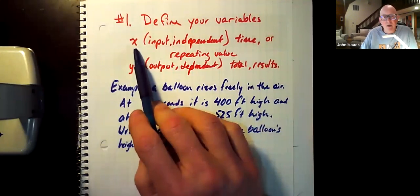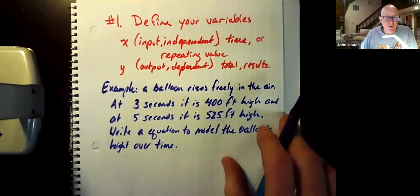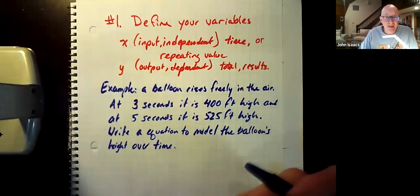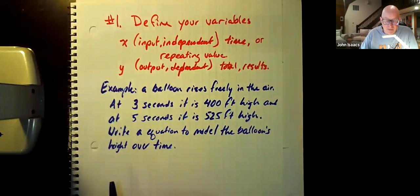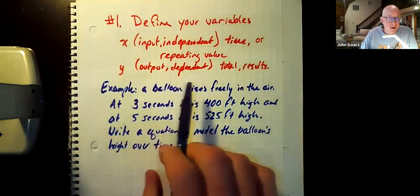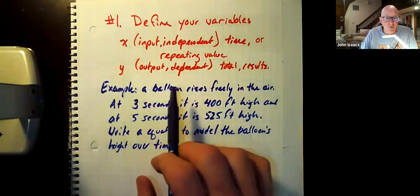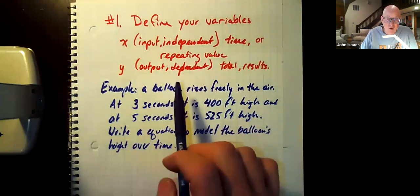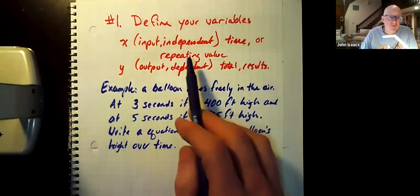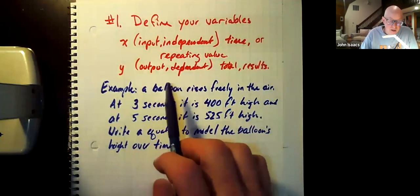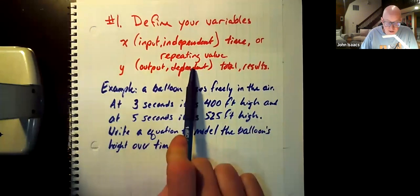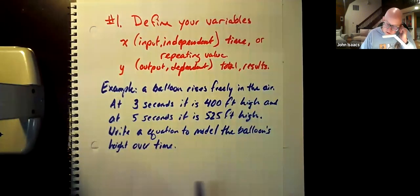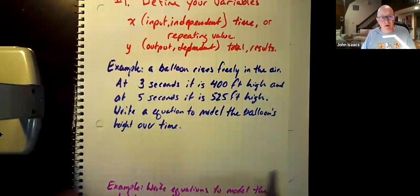But you need a variable that represents something that's independent, something that's the input. Very often, that's time. When time is in your problem, you probably need to use time as your input. As your output, might be things that are like totals or results, things that result from whatever's happening here, or something that's dependent on time, or the independent thing might be some repeating value. x is going to be the independent variable, very often time, y is going to be the dependent variable, very often totals or results. So let's take a look at the first problem here. And we're going to find variables first.